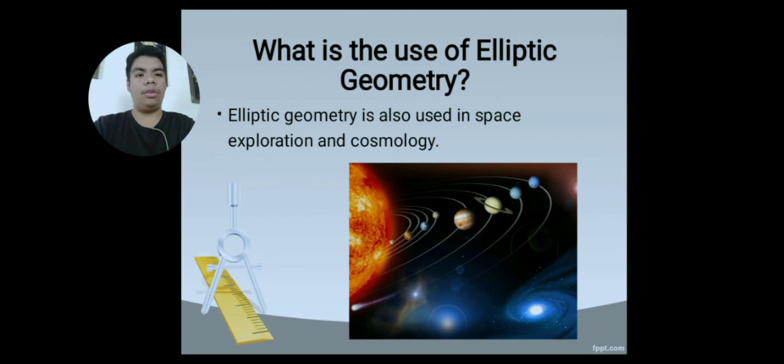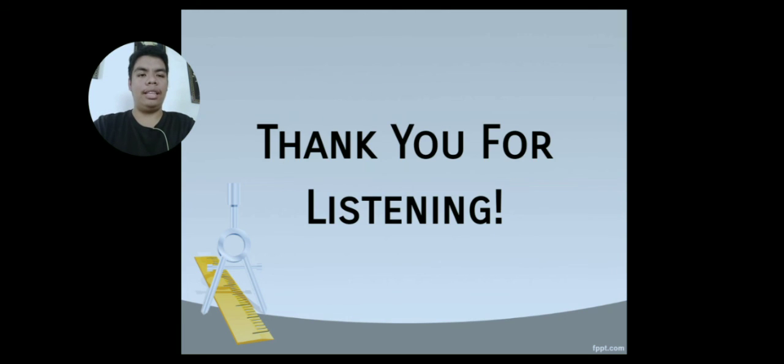Elliptic geometry is not only used to calculate the distance between two cities, but it is also used in space exploration and cosmology. During our elementary days, we were already taught about the solar system. If we can still remember, and if we look closely, the orbit of every planet is in an ellipse. So therefore, the planet must move around the Sun in an elliptical way. So that ends our report. Thank you for listening.